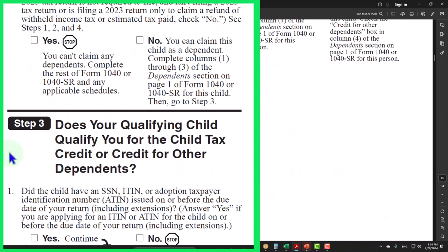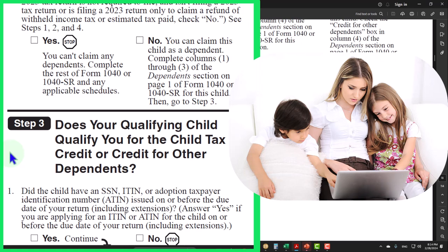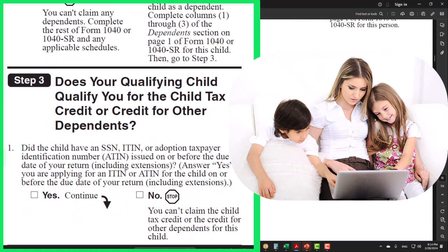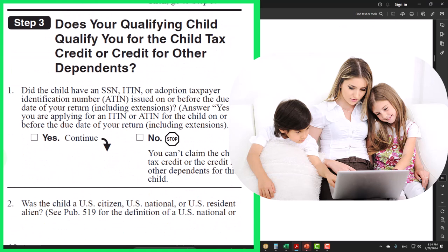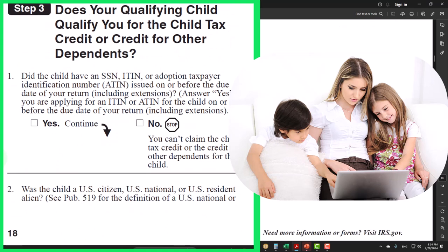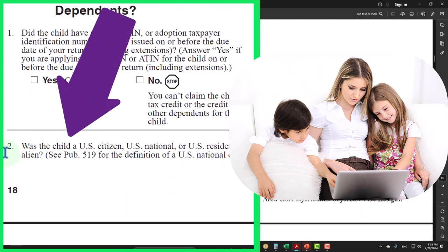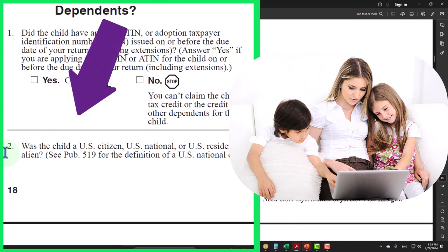Let's go to part three. Does your qualifying child qualify you for the child tax credit or credit for other dependents? Now we're looking at the credit itself. Number one, did the child have a Social Security number, an ITIN, or an adoption taxpayer identification number issued on or before the due date of your tax return including extensions? Answer yes if you are applying for an ITIN or ATIN for the child on or before the due date of your return. If yes, we continue. If no, you can't claim the child.